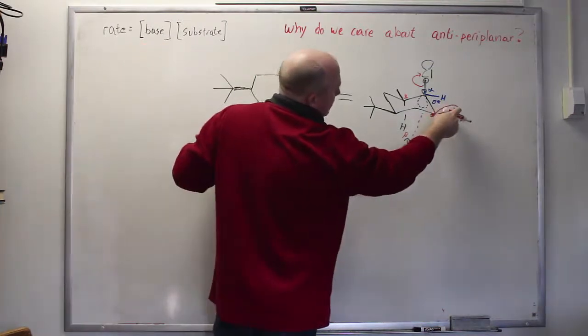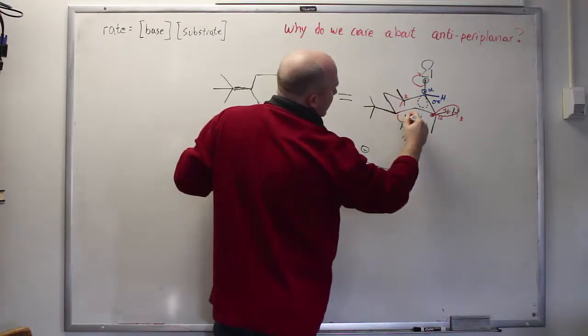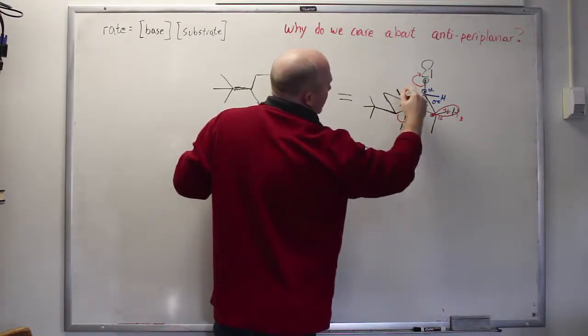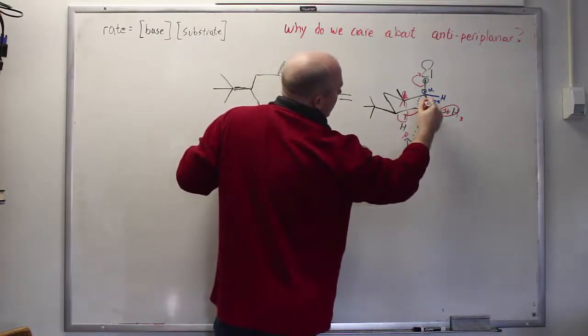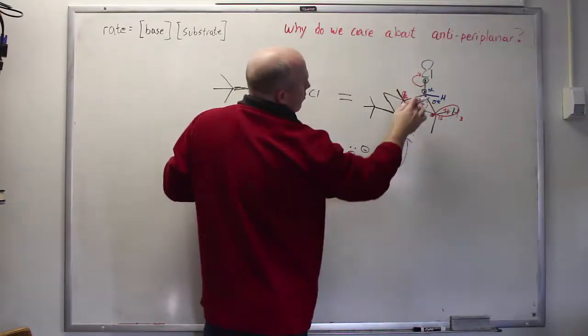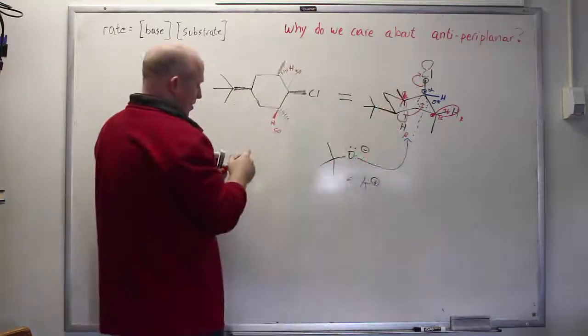Again this orbital is not aligned correctly. This orbital right here is. This orbital is aligned perfectly. So if we encounter this hydrogen instead the electrons flow from that orbital into the sigma star orbital. The chloride leaves. Boom there you have it.